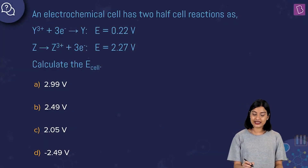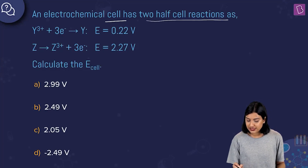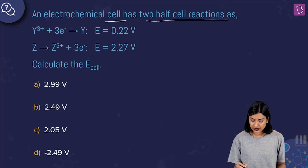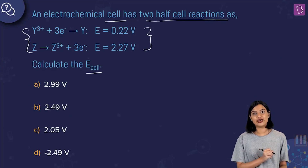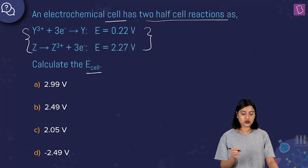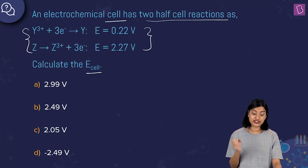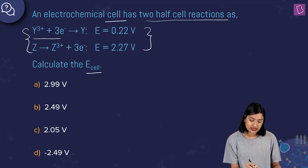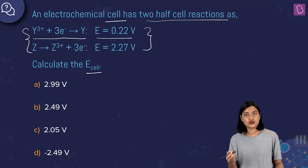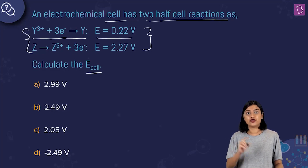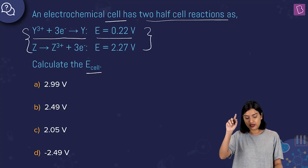An electrochemical cell has two half-cell reactions. The first reaction is Y³⁺ + e⁻ → Y, with a potential of 0.22 volts. Here Y³⁺ is going to Y⁰, meaning the oxidation state goes from +3 to 0, which is reduction.